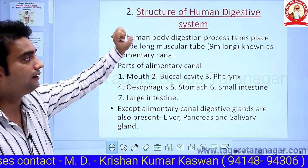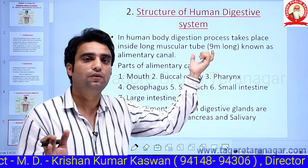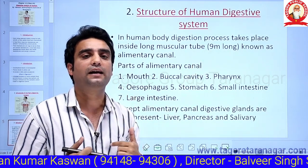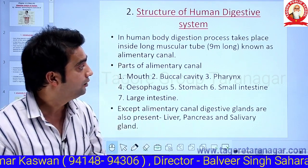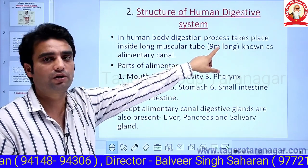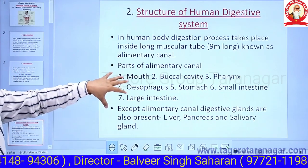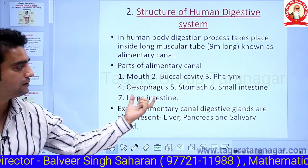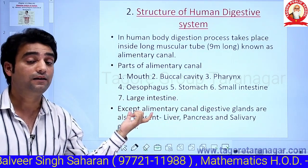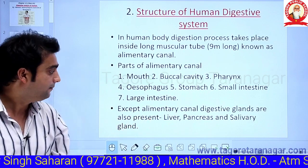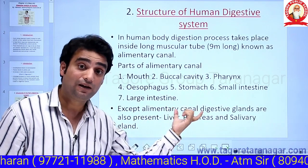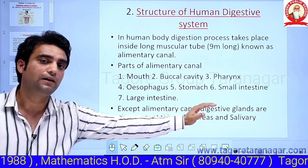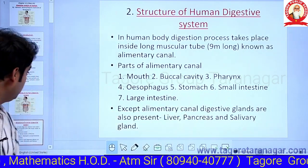A very important question for board examinations: what is the complete length of the alimentary canal inside the human body? It is about nine meters long. The parts of the alimentary canal are: mouth, buccal cavity, pharynx, esophagus, stomach, small intestine, and large intestine. In addition to the alimentary canal, digestive glands are present — for example, liver, pancreas, and salivary glands.